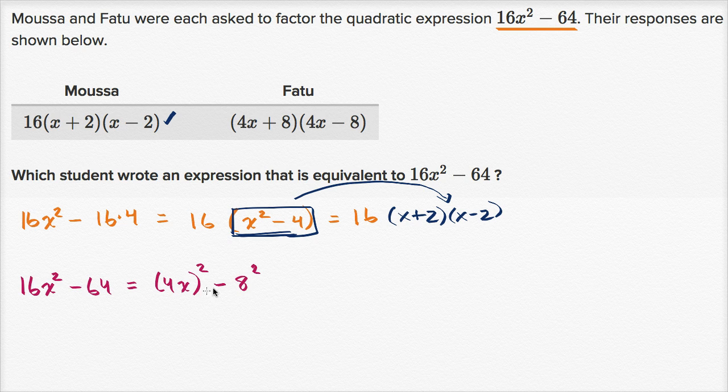So when you write it like this, it's clear that this is a difference of squares. So this is going to be four x plus eight times four x minus eight.